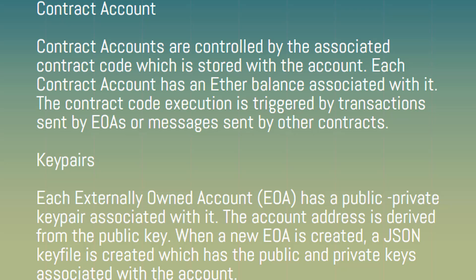Each externally owned account (EOA) has a public-private key pair associated with it. The account address is derived from the public key. When a new EOA is created, a JSON key file is created which has the public and private keys associated with the account.